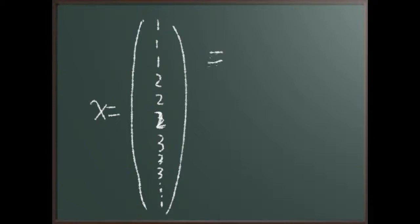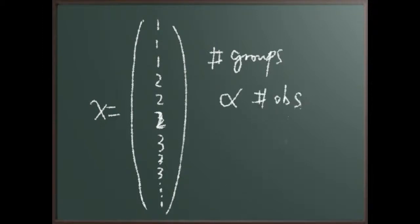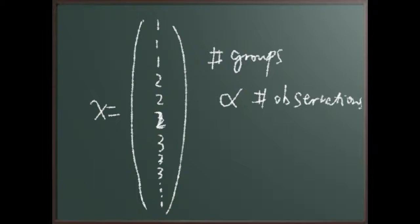The key situation here is that the number of groups is basically proportional to the number of observations you have — in this case roughly one-third of the number of observations are groups. If you fit this as a fixed-effects model, you end up losing many degrees of freedom because the number of groups is large and proportional to n. You don't want the degrees of freedom lost to be proportional to the number of observations in your dataset. So I would recommend fitting this situation as random effects.